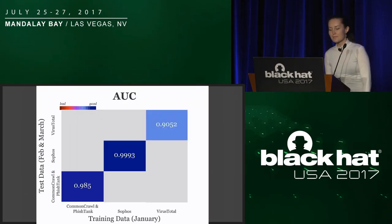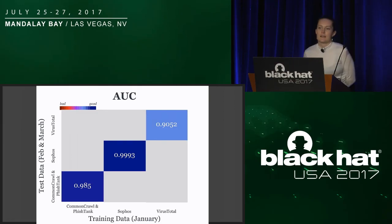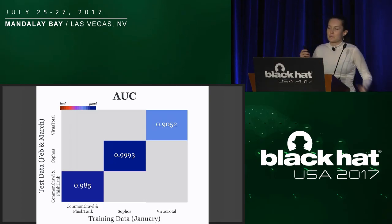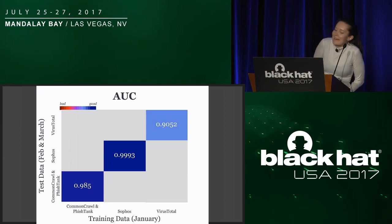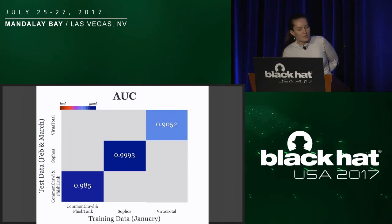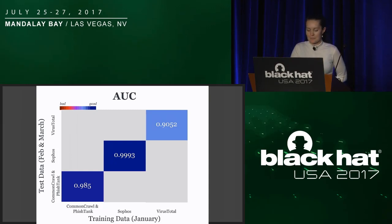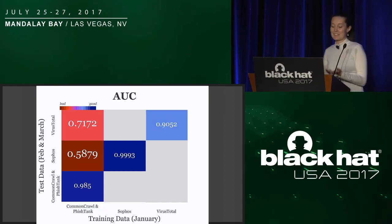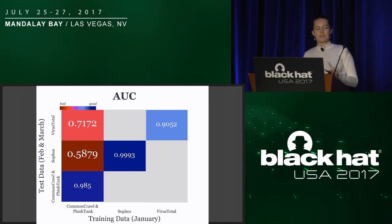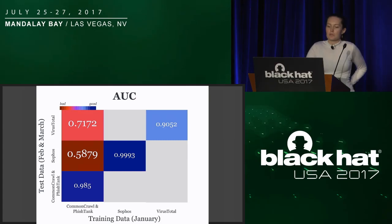Looking at the AUC results — on the x-axis are our training data sources (our models) and on the y-axis are our test data sources. We'd probably choose a Sophos or Common Crawl model. The Sophos trained model did really well, getting an AUC of 0.9993. The Common Crawl model did a little bit worse but still pretty solid. The VirusTotal trained model did okay but pretty badly on its own test set. But what happens when we look at how each model did on the other test data sets? The Common Crawl trained model got an AUC of about 0.58 for our Sophos test data and 0.7 for VirusTotal — pretty miserable. If we deployed this model and deployment data looks like VirusTotal or Sophos, we'd be missing a lot of threats.